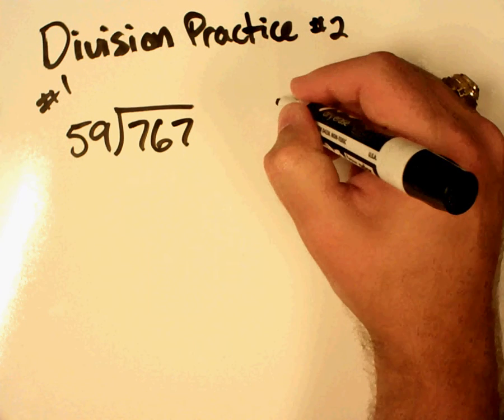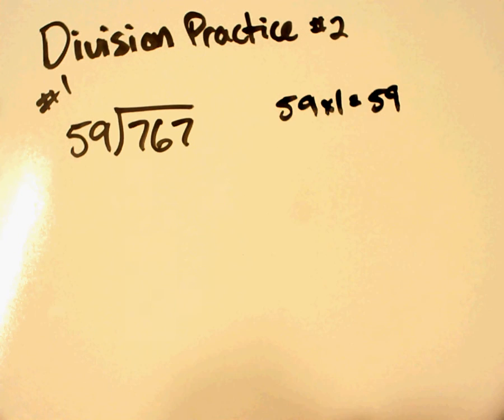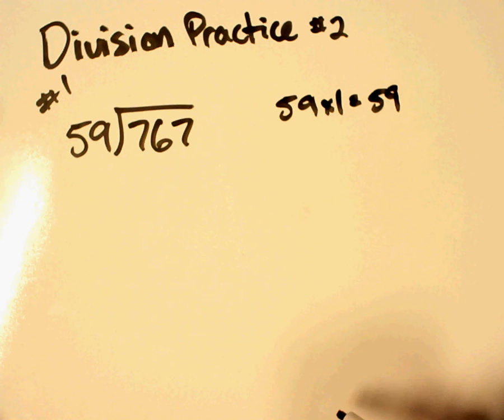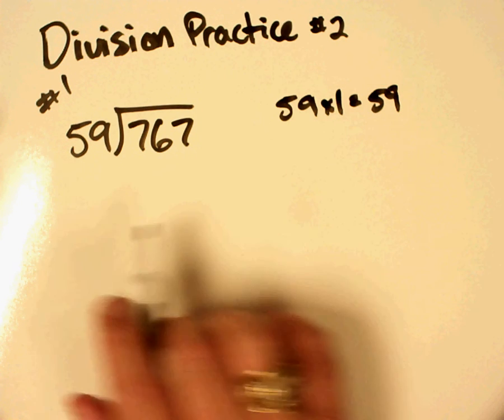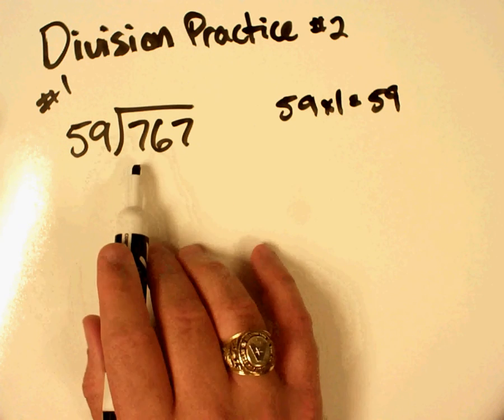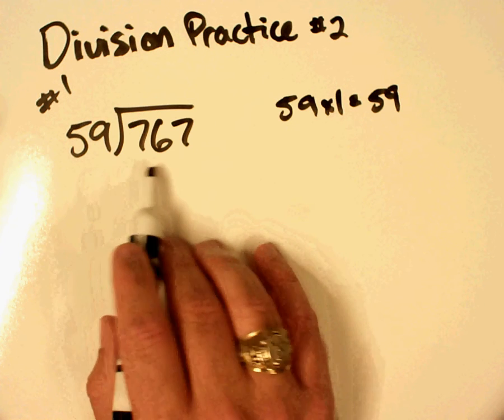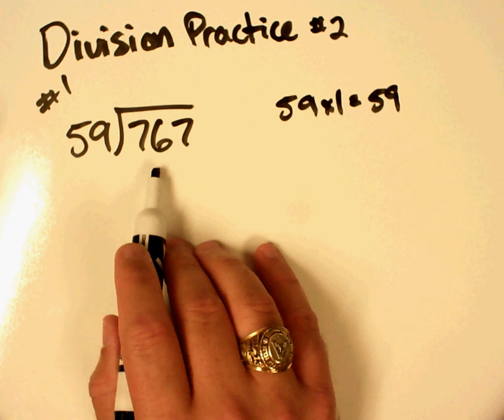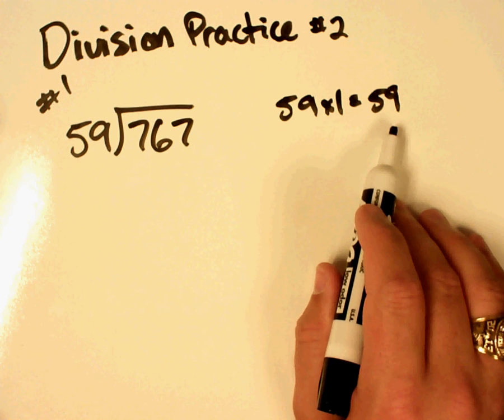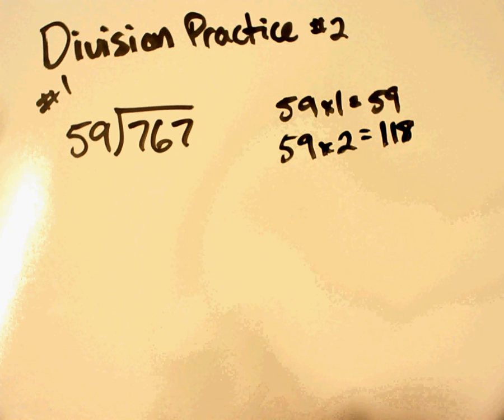What you can do is you can do the multiples of 59 just off to the side. Now, you can go all the way from 59 times 1 all the way down to 59 times 9, but you may not need to. So what you want to do is you'll want to look at, what are we dividing? And we'll start with the 7. We know 59 doesn't go into 7, so we move to the right one place. How many times does 59 go into 76? Well, that one's pretty easy, because we know that it goes in one time.